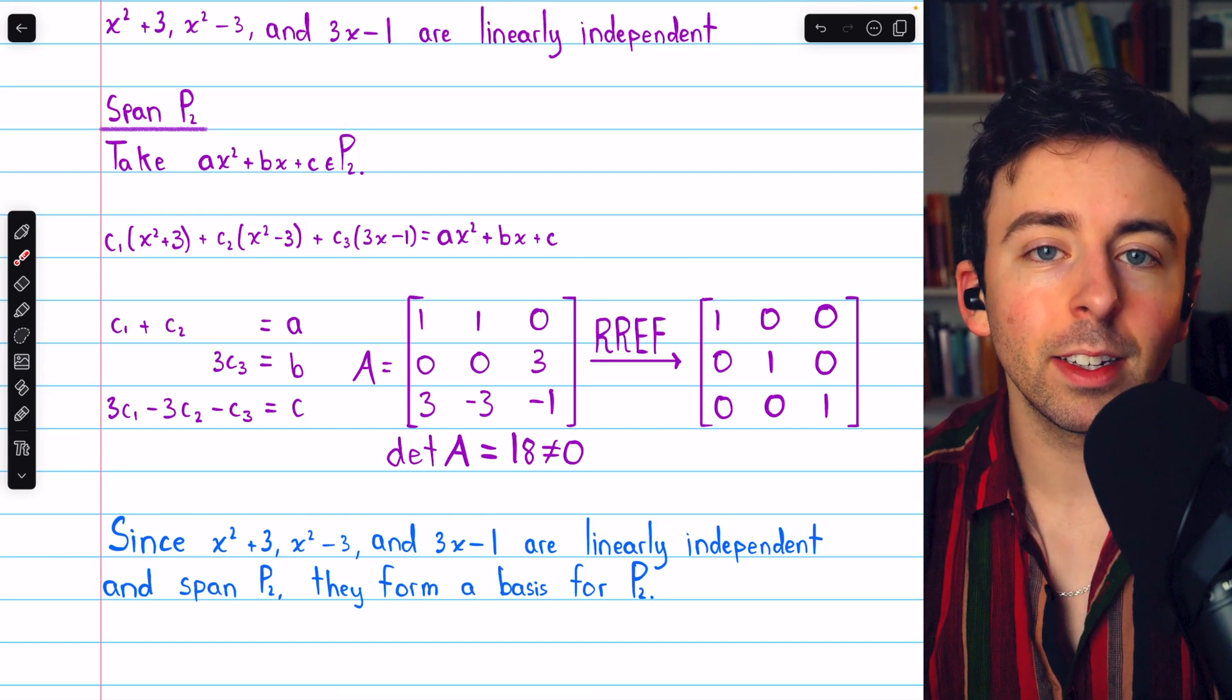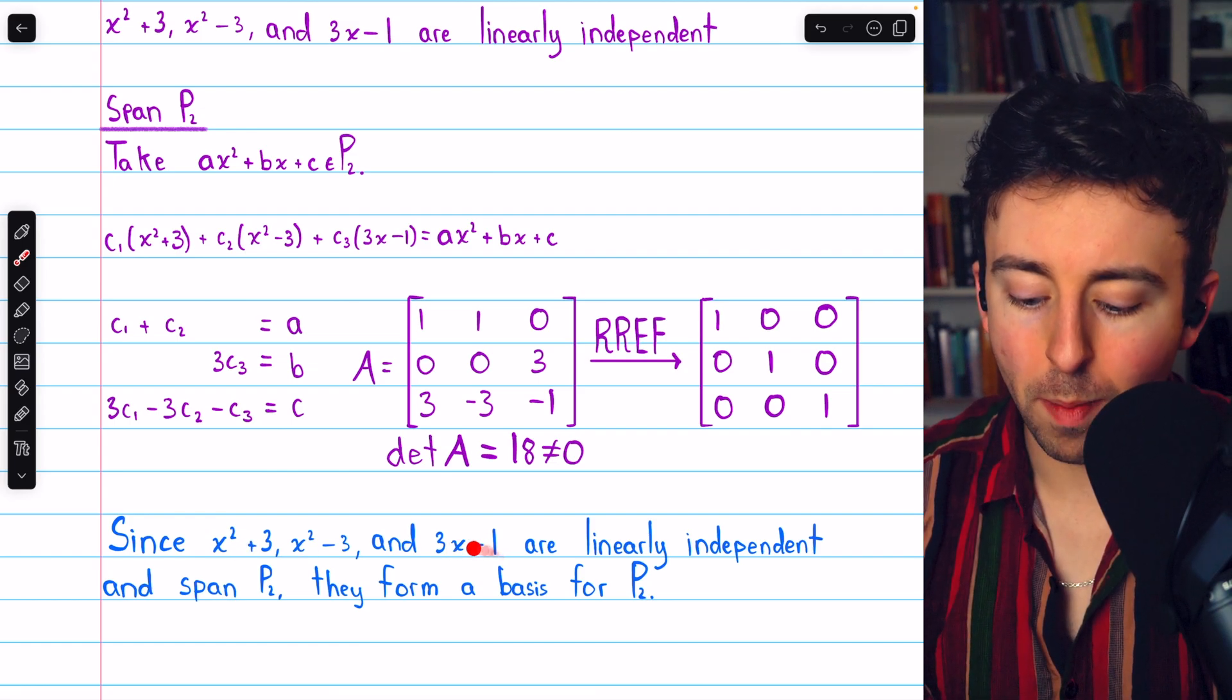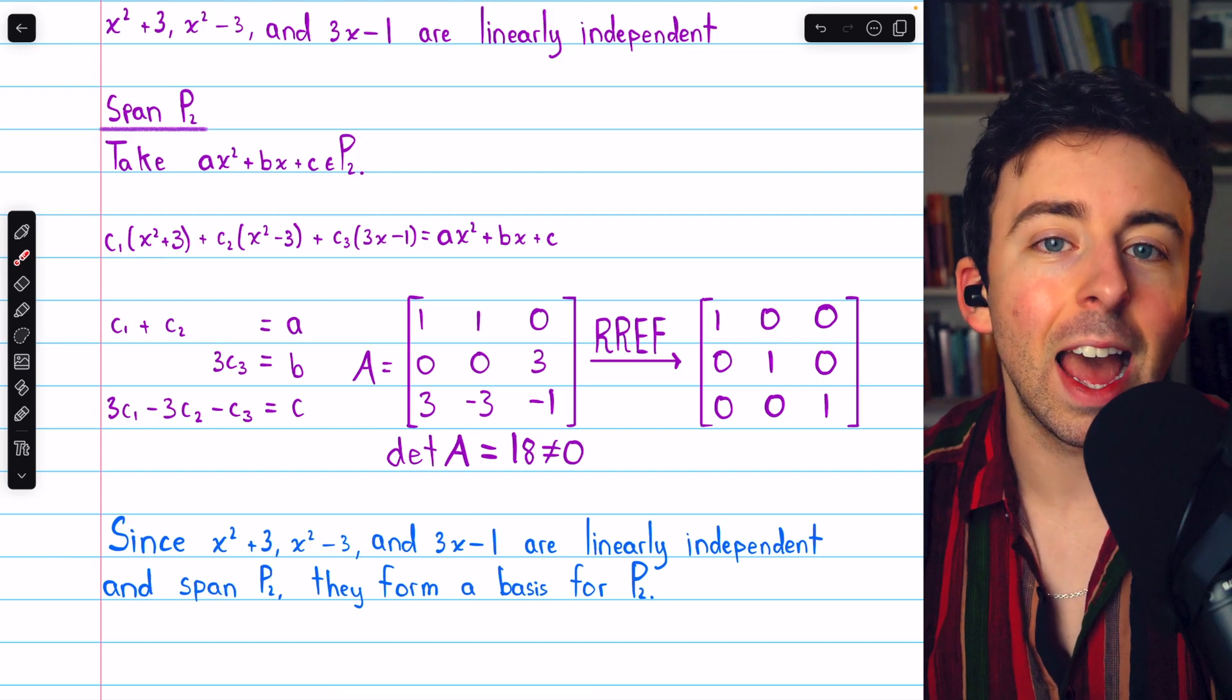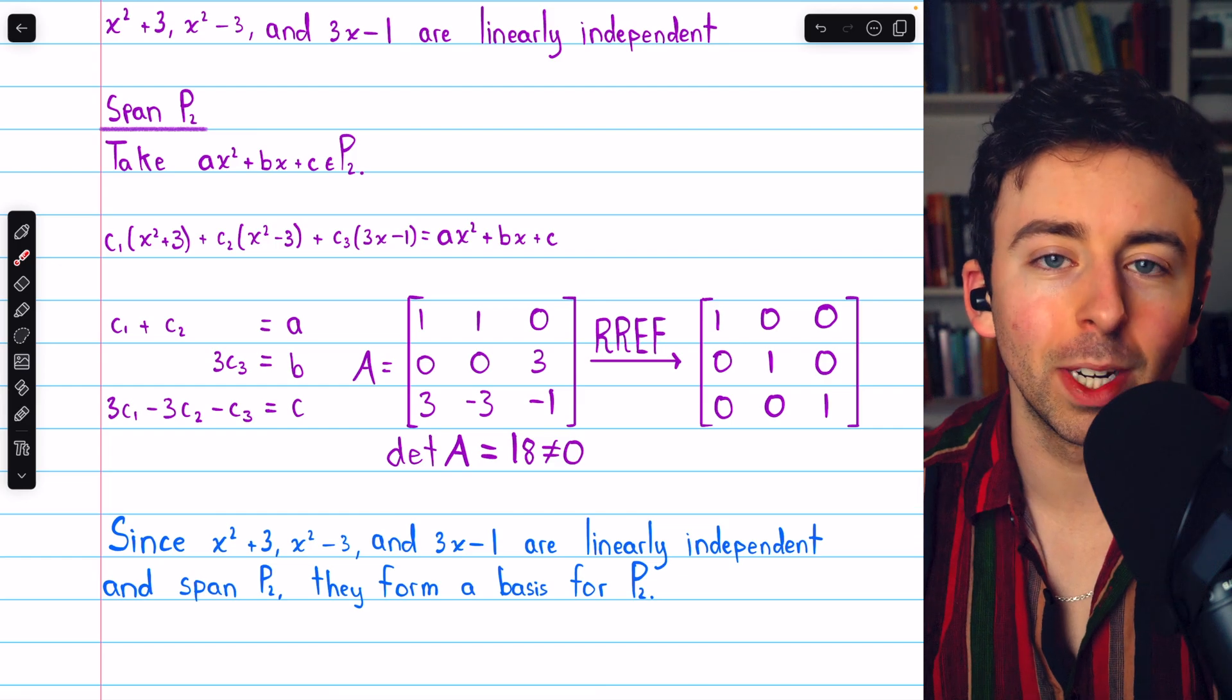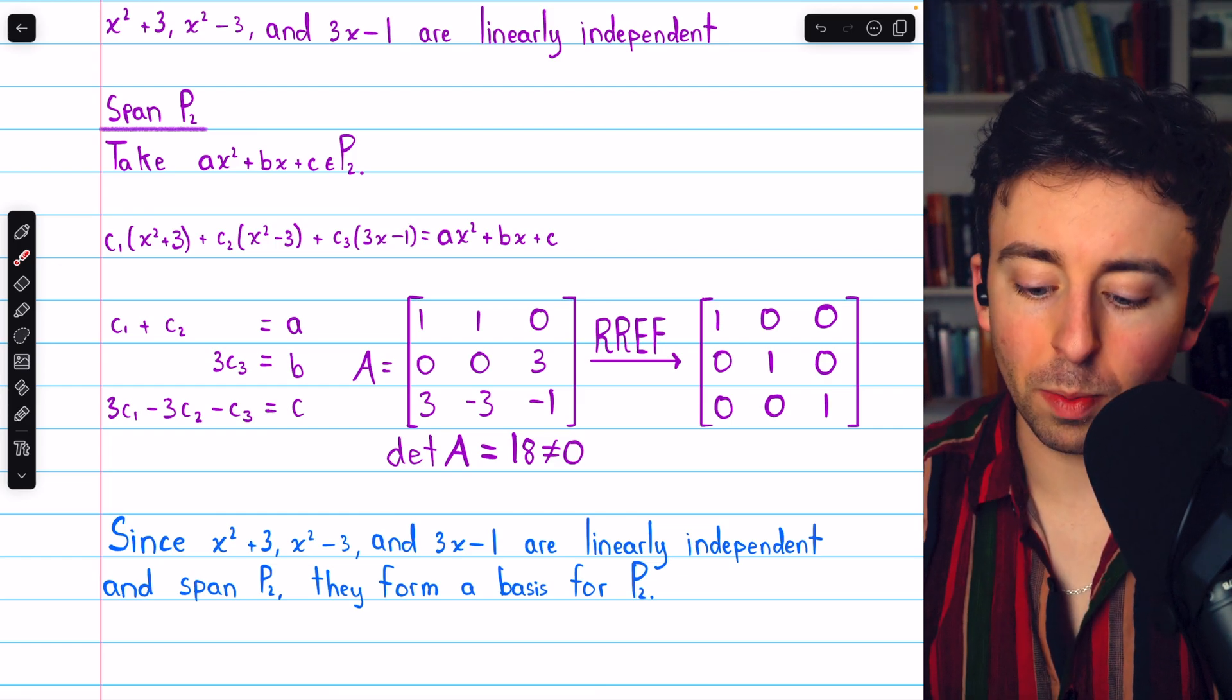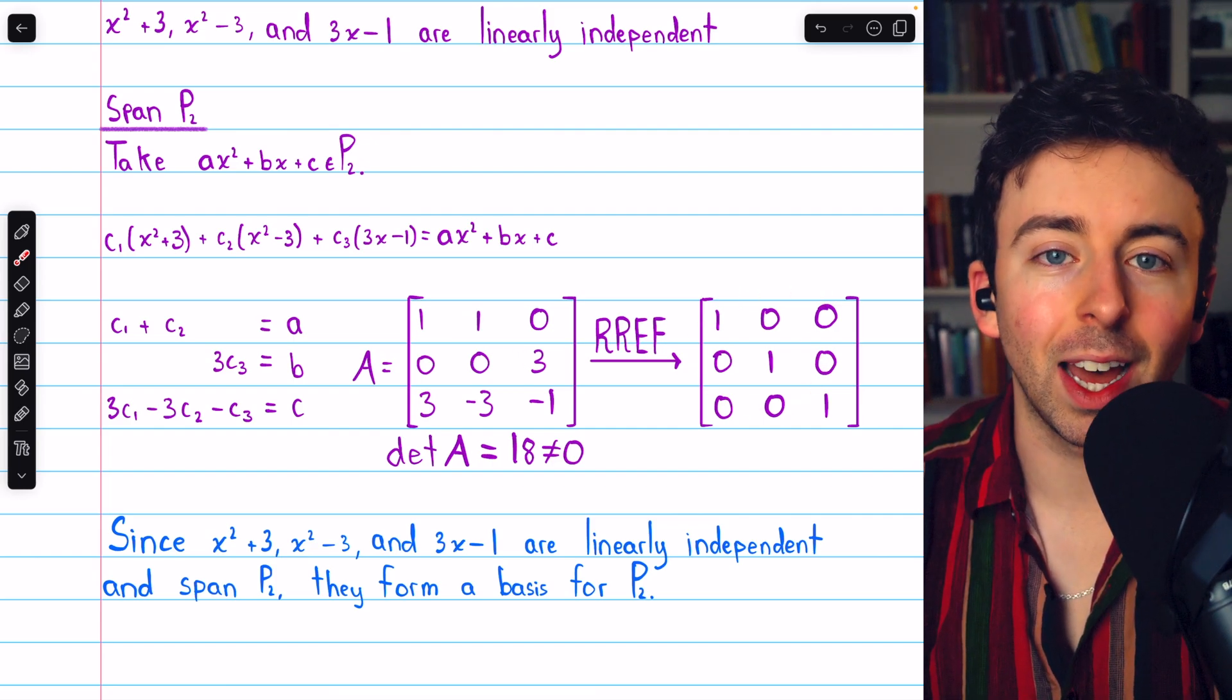So, they're linearly independent, they span the space. Hence, those three polynomials form a basis for the vector space of polynomials of degree at most two. In short, you can just find the coefficient matrix, calculate the determinant. If it's non-zero, then yes, you've got a basis. Alternatively, you could perform Gauss-Jordan elimination, and if you get the identity, then you've got a basis.